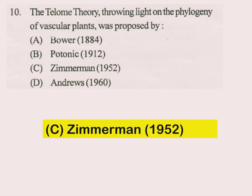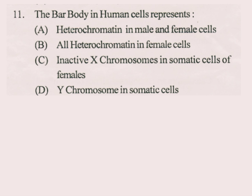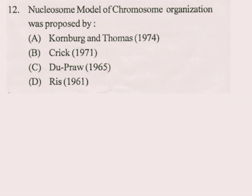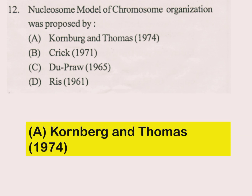Question number 11. The Barr body in human cells represents? The answer is C part: inactive X chromosomes in somatic cells of females. Question number 12. Nucleosome model of chromosome organization was proposed by? The answer is A part: Kornberg and Thomas, 1974.